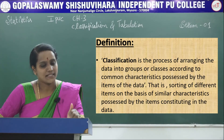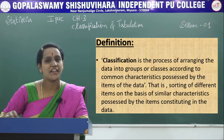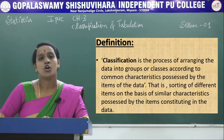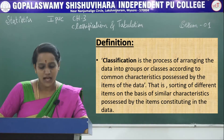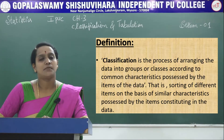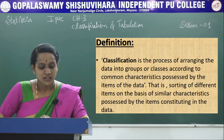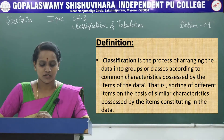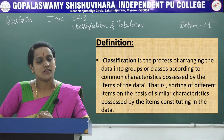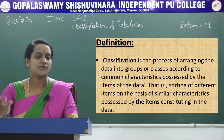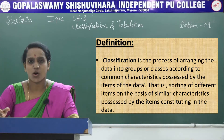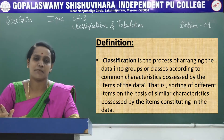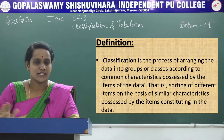Classification is the process of arranging the data in groups or classes according to common characteristics — that is, similar characteristics possessed by the items of the data. This is the sorting of different observations on the basis of similar characteristics. For example, in a classroom we separate data as boys and girls based on sex.